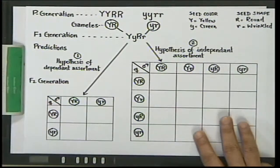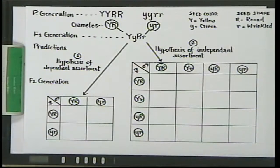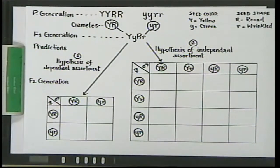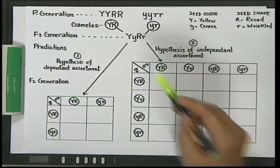Now let's talk about the dihybrid cross. What is a dihybrid cross? A dihybrid cross is a cross between two individuals which are heterozygous for two characters. In a monohybrid cross it was a cross between individuals heterozygous for one character, so in a dihybrid cross individuals are heterozygous for two characters.